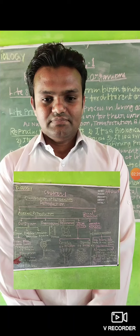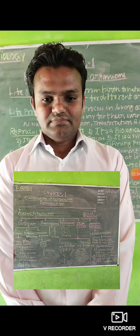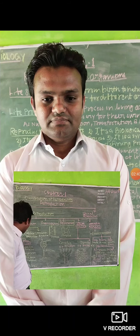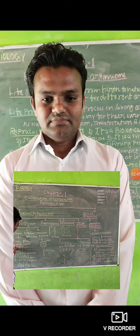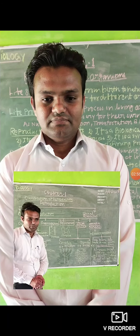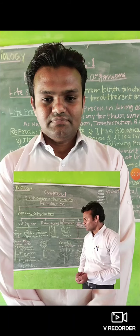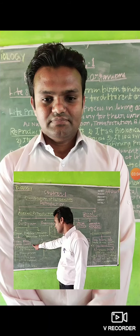The second is transverse and the third is longitudinal binary fission. So binary fission is possible by three ways: irregular, transverse, and longitudinal. The second type of fission is multiple fission, which is very common in plasmodium.